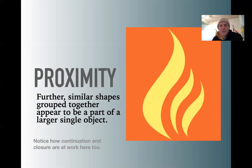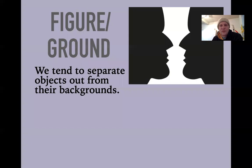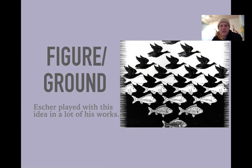The figure-ground relationship — we've seen something about this before. We tend to separate out objects from their backgrounds. We probably see this as two faces separated out from a background first, and then maybe we read the trick where the white has its own shape as well. Optical illusions are built around a lot of these ideas. Escher played a lot with the figure-ground relationship that we saw in our earlier lectures.